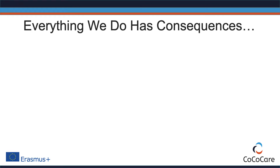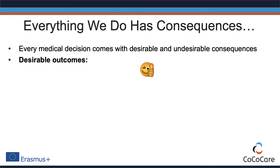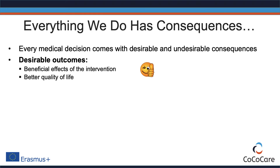Following Darwin's example about desirable and undesirable consequences of marriage, guideline developers need to start out with a list of outcomes that are relevant for practice. Why is it important to think about outcomes at the beginning of guideline development? Because every medical decision comes with desirable and undesirable consequences. Desirable outcomes are, for example, beneficial effects of an intervention or better quality of life.